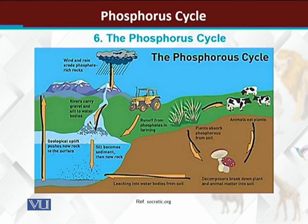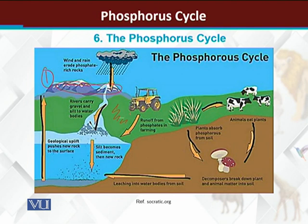Now in this diagram, we will start with phosphorus present in the sedimentary rocks. Inside sedimentary rocks, the reservoir of phosphorus is present. Sedimentary rocks undergo weathering, thorough erosion, and ultimately the phosphorus comes out of the sedimentary rocks into the soil. The phosphorus now in the soil is utilized by plants, and some of it is also used by fungi.